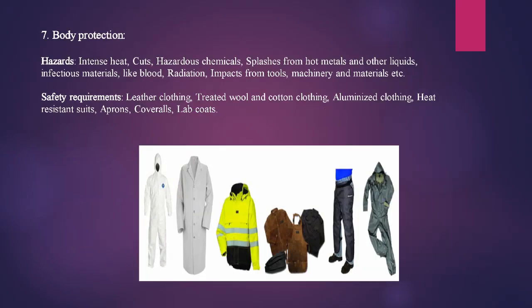Number seven is body protection. Hazards include intense light and heat, cut hazards, chemical splashes, splashes from hot metals and liquids, infectious materials like blood, radiation, and impacts from tools, machinery, and materials. Safety requirements include leather clothing, treated wool and cotton clothing, aluminized clothing, heat-resistant suits, aprons, coveralls, and lab coats.